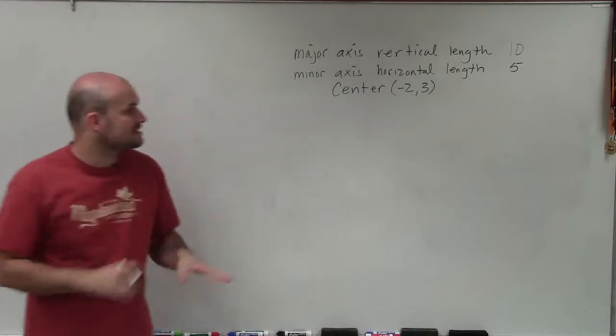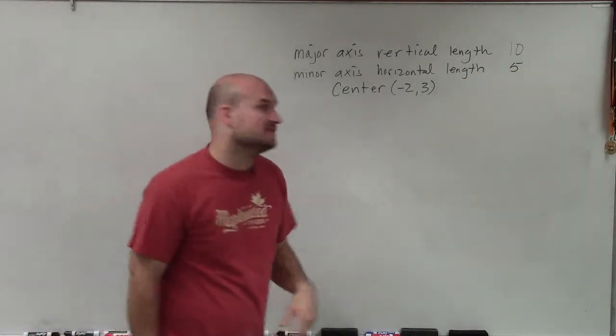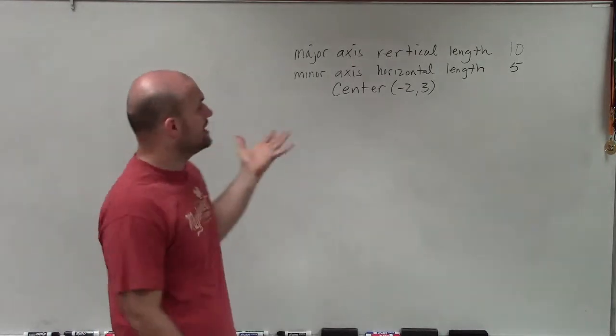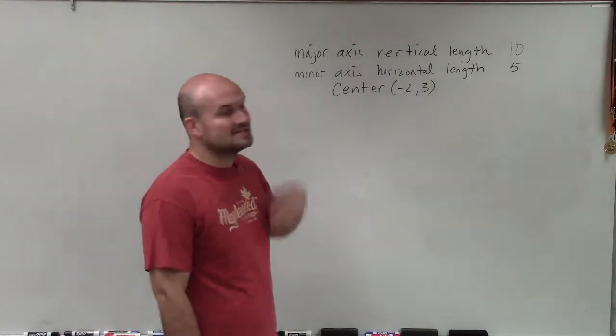Welcome. What I want to do is show you how to write the equation of the ellipse when given the major axis has a vertical length of 10, and the minor axis has a vertical length of 5, as well as given the center.